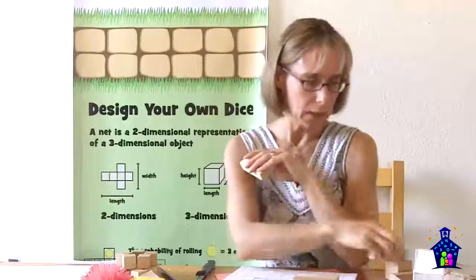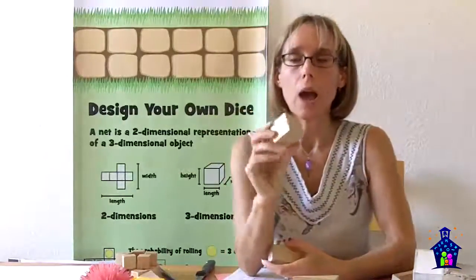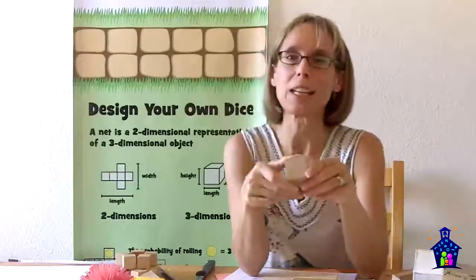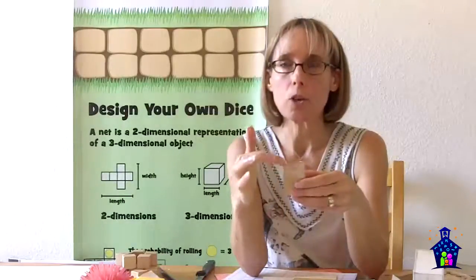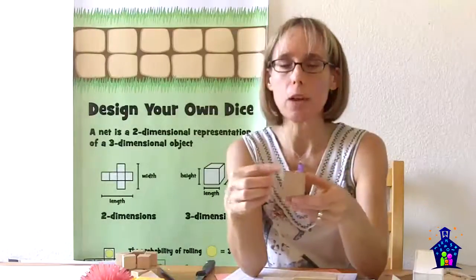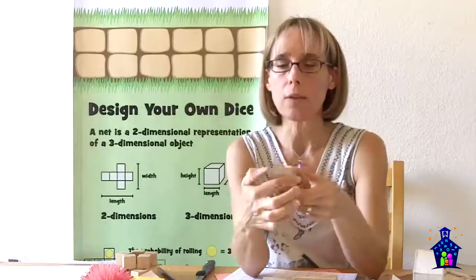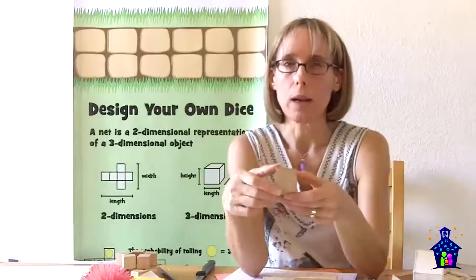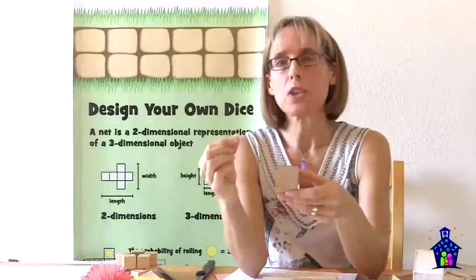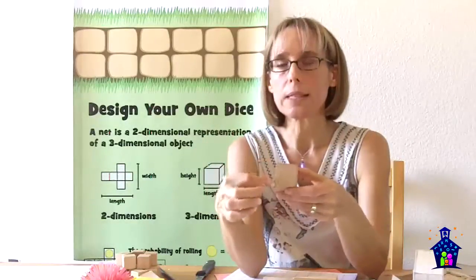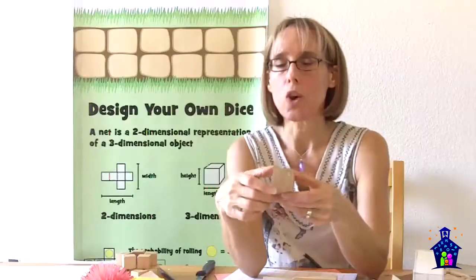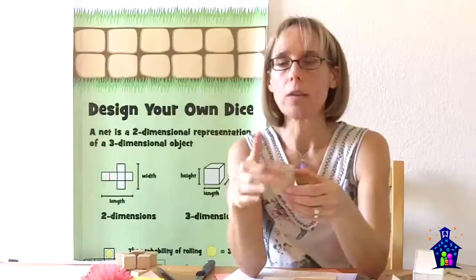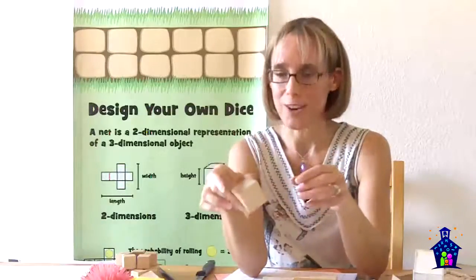So we called this a cube earlier. It is also a rectangular prism. Now if you go back to two-dimensional geometry when we were studying polygons, polygons are two-dimensional, polyhedrons are three-dimensional. So when we were back talking about polygons, we discovered that a square is a rectangle. It fits the definition, two sets of parallel sides and right angles. But it's a special kind of rectangle because all of its sides are the exact same length. So this cube is a special rectangular prism because all of the faces are made up of squares. So it fits both those categories.